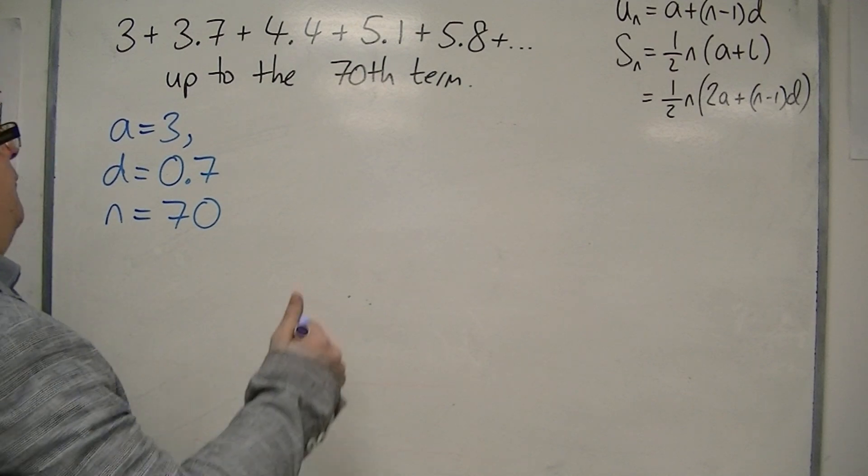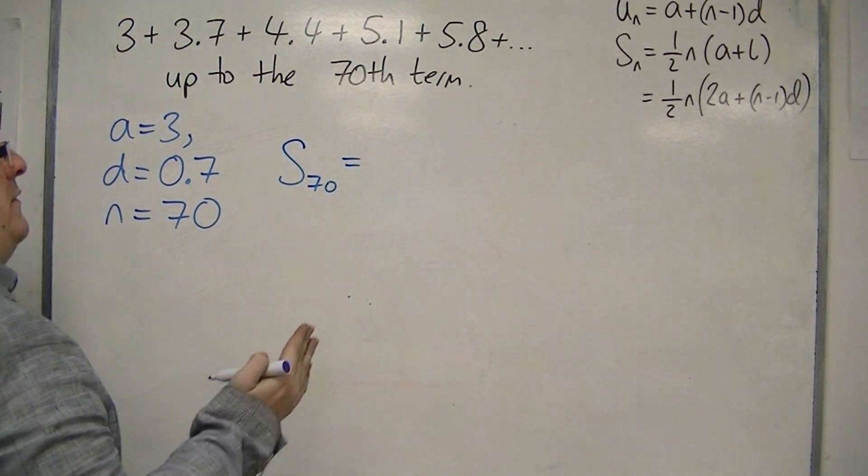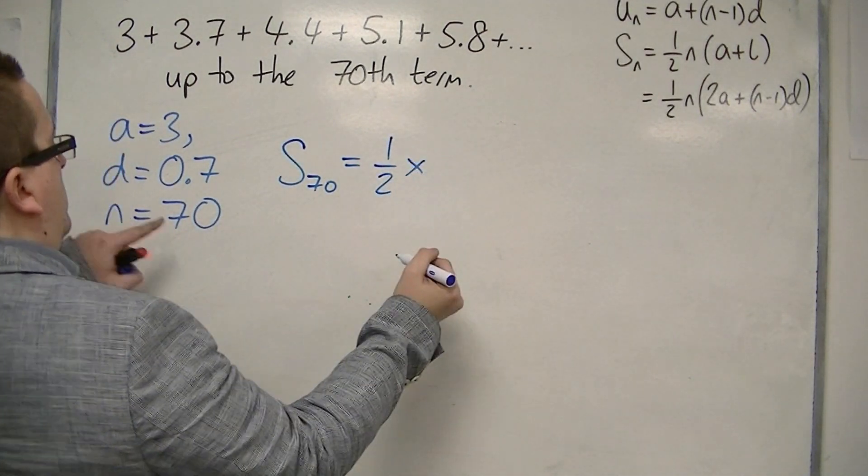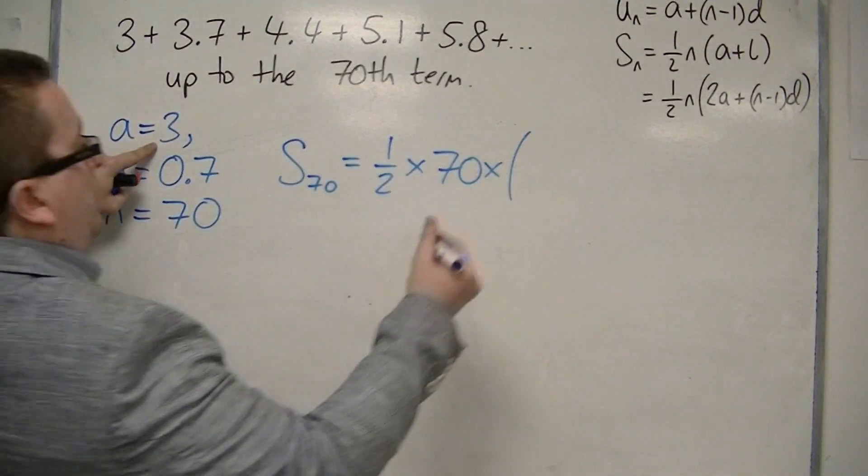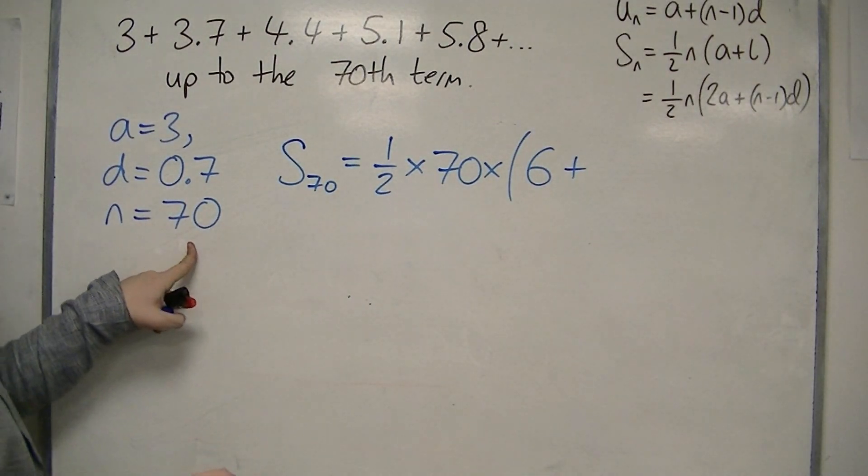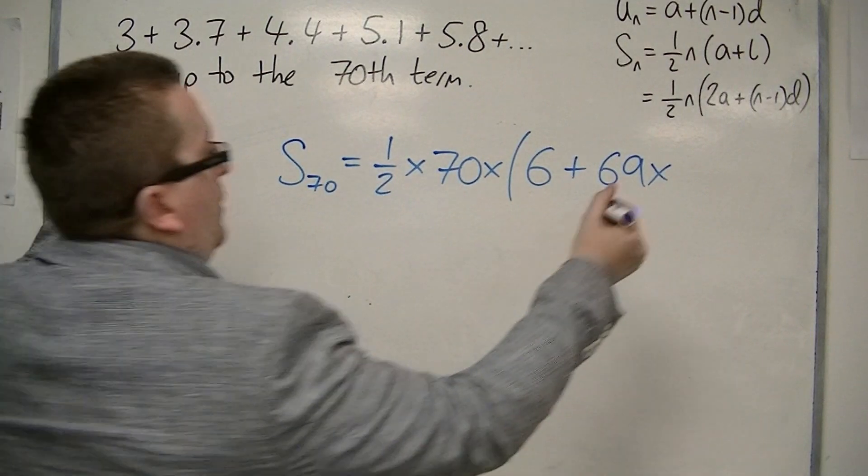So if I use that formula, then S₇₀, the sum up to the 70th term, is 1/2 times n times 2 lots of a, so 2 lots of 3, that's 6, plus n minus 1, well that's 69, times d, 0.7.